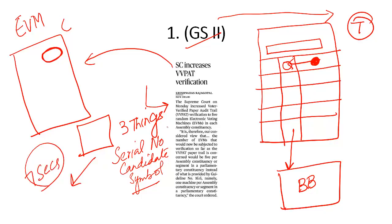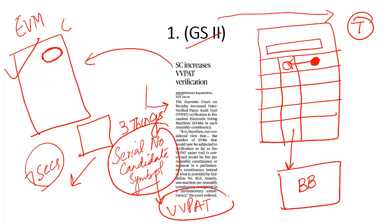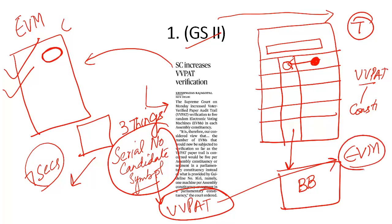These three things are displayed on the VVPAT screen for seven seconds. After seven seconds, the slip is cut and drops into the VVPAT box. At the time of counting, till date the procedure is that Election Commission counts the EVMs and one VVPAT box per constituency — meaning in an entire Parliamentary or Assembly constituency, one VVPAT is taken up, and these slips are counted and matched with EVM votes to check whether EVMs are foolproof.